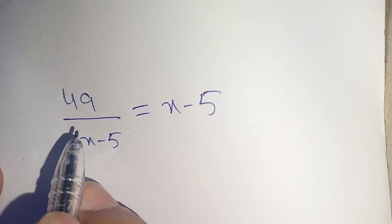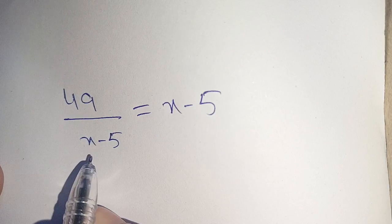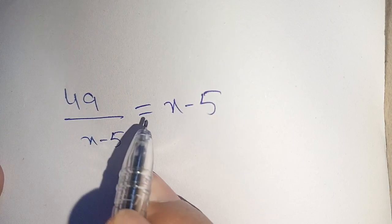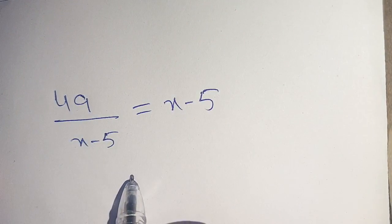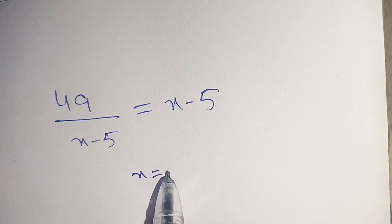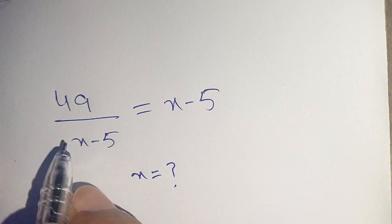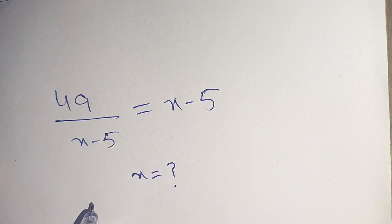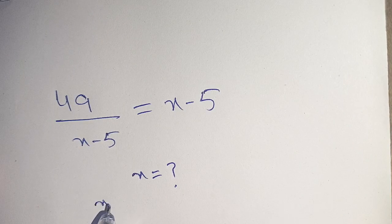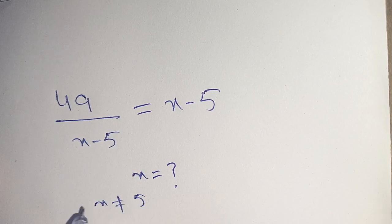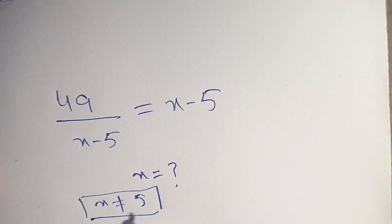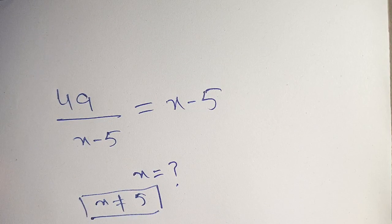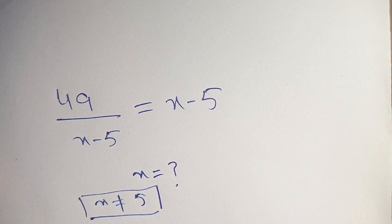Hello everyone. How to simplify 49 divided by x minus 5 is equal to x minus 5, and we have to find the value of x which satisfies this equation. From this, x cannot equal 5 because when x is equal to 5 it is undefined. Thus x cannot equal 5.